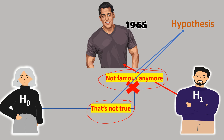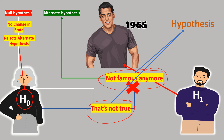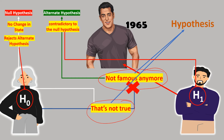Let's talk about each hypothesis one by one. The first one is called the null hypothesis. The property of the null hypothesis is that it says there is no change in this state — here H0 believes that Salman Khan is still very famous. Another property is that H0, or null hypothesis, always rejects the alternate hypothesis, and it is always represented by H0. The other one is called the alternate hypothesis, which is contradictory to the null hypothesis and is represented by H1.